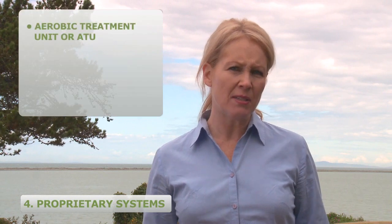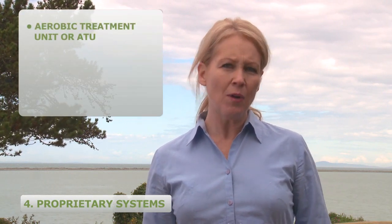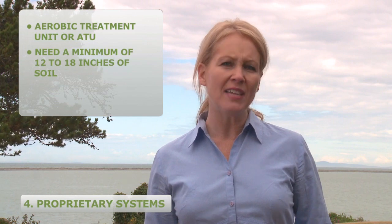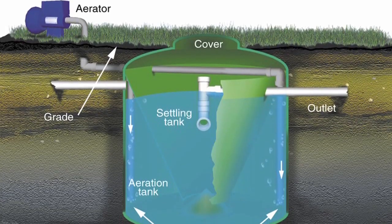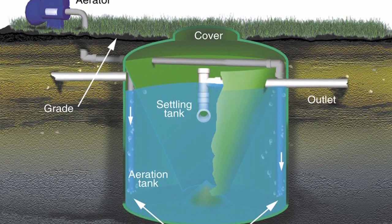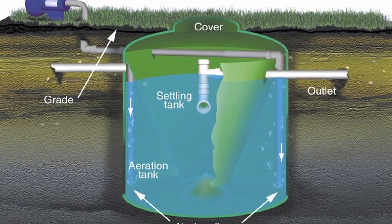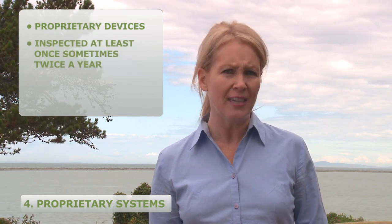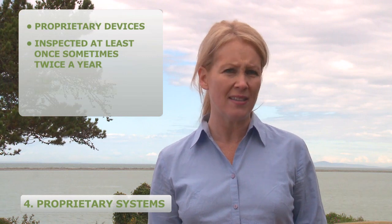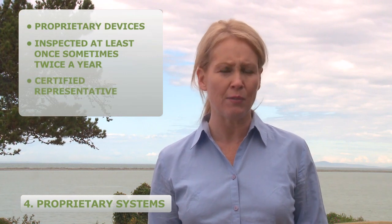There are several proprietary systems for properties that do not have sufficient native soil depth. One type is an aerobic treatment unit, or ATU. Aerobic systems need a minimum of 12 to 18 inches of soil. A blower or aerator injects air into a tank, enhancing the aerobic microbial action. This type of system will often require some form of disinfection such as chlorine or UV treatment before the wastewater enters the drain field. ATUs are proprietary devices and are required by the manufacturer to be inspected at least once, and sometimes twice, a year by a manufacturer's certified representative.